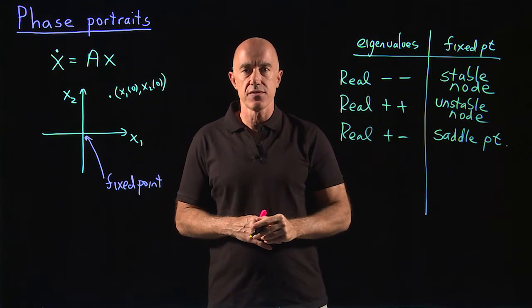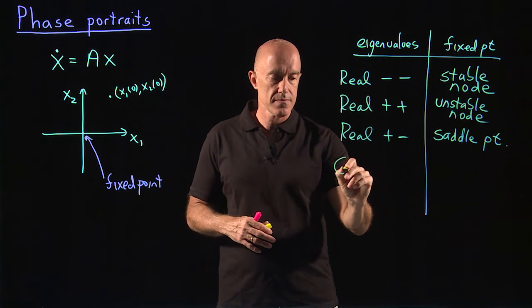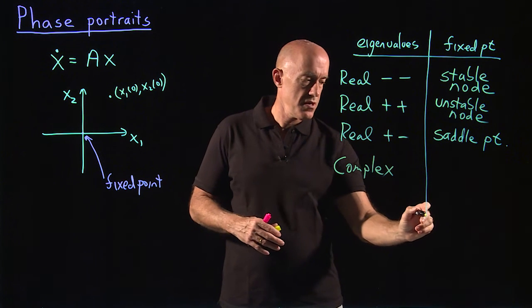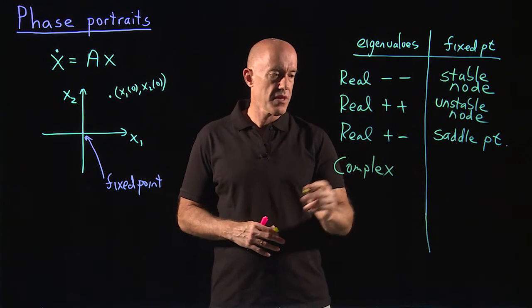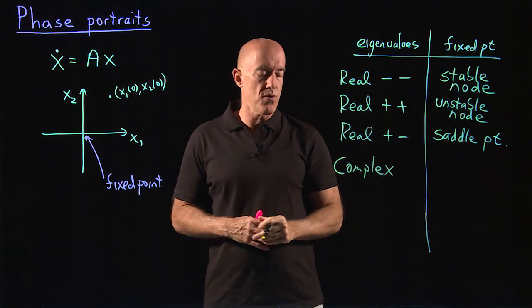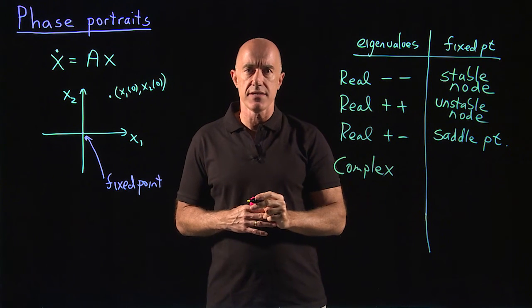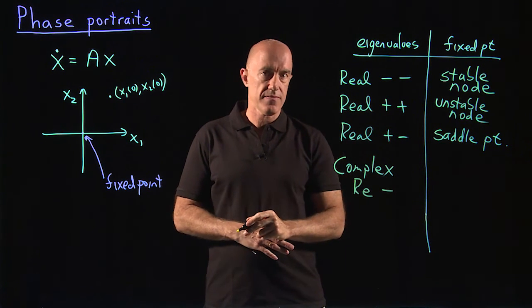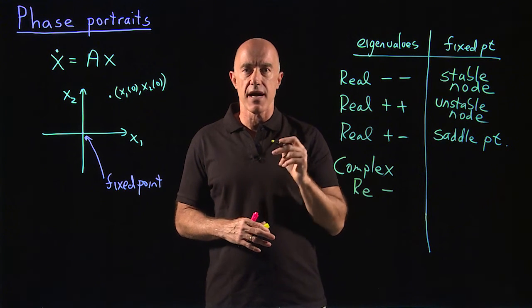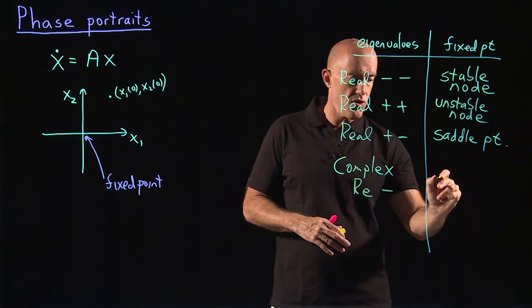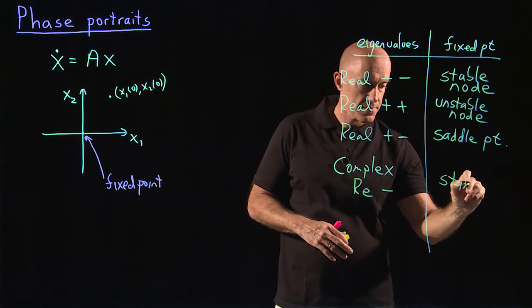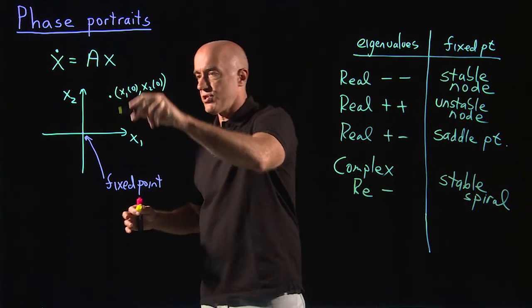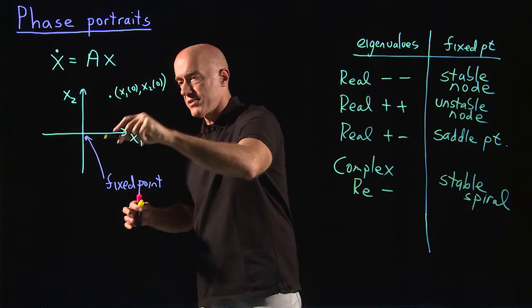Apart from real eigenvalues, we can have complex eigenvalues. And then there are two cases here. They're all called spiral points. But what matters here is the sign of the real part. So if the real part is negative, the real part of the complex eigenvalue is negative, then this is called a stable spiral.